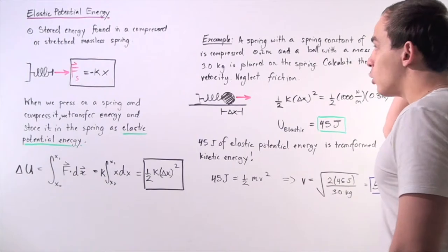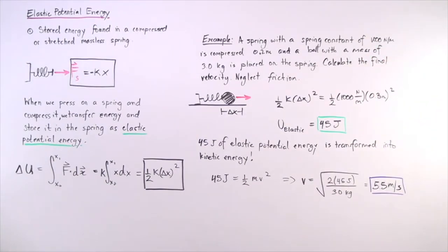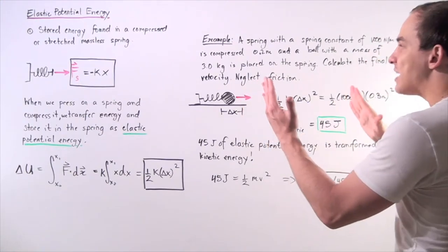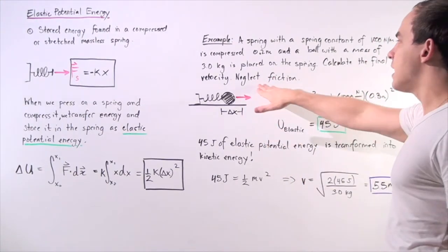Let's look at the following example. Suppose a spring with a spring constant of 1000 newtons per meter is compressed 0.2 meters and a ball with a mass of 3 kilograms is placed on the spring. Calculate the final velocity of the ball when it detaches from the spring, and let's neglect friction.